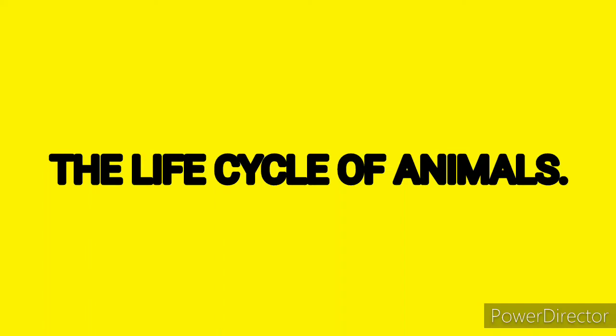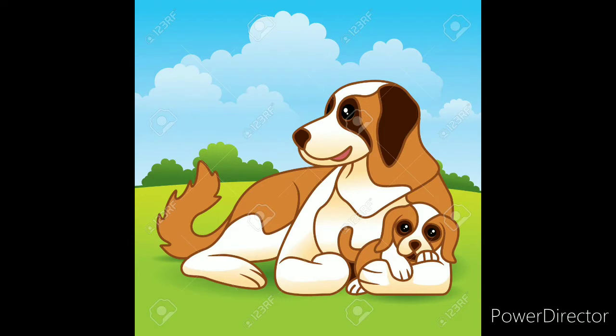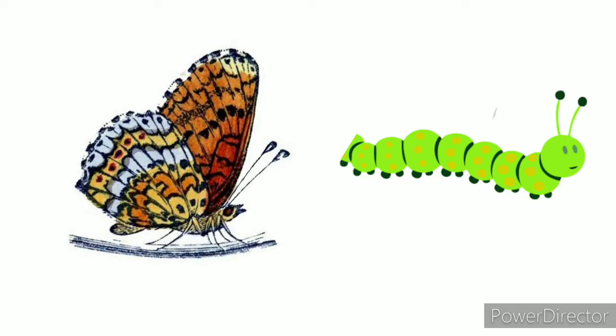The Life Cycle of Animals. Look at the puppies and their mother in the picture. Do you see some similarities? Yes, there are similarities between the puppies and their mother. Now take a look at this butterfly and the caterpillar that has come out of the egg. Do you see any similarities? No, there are no similarities between the butterfly and the caterpillar.